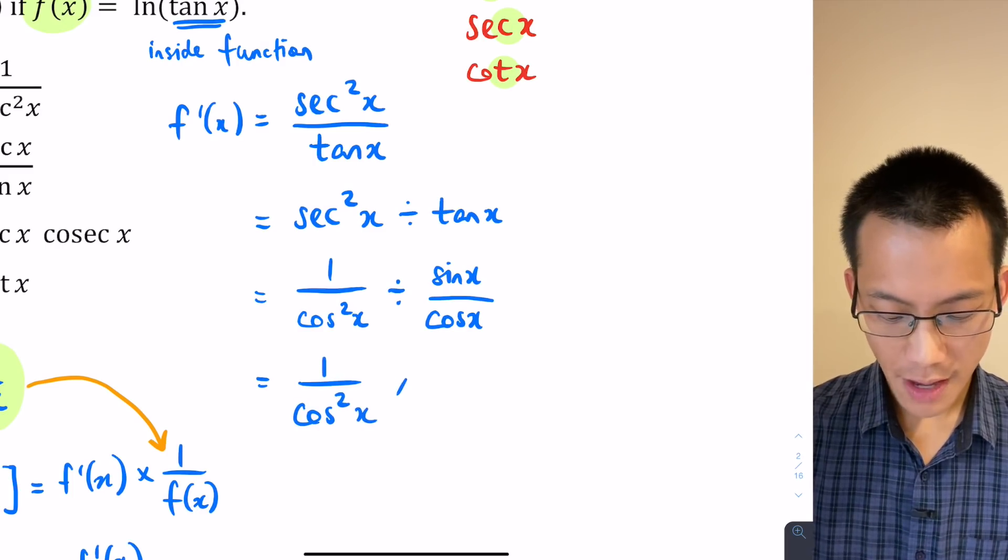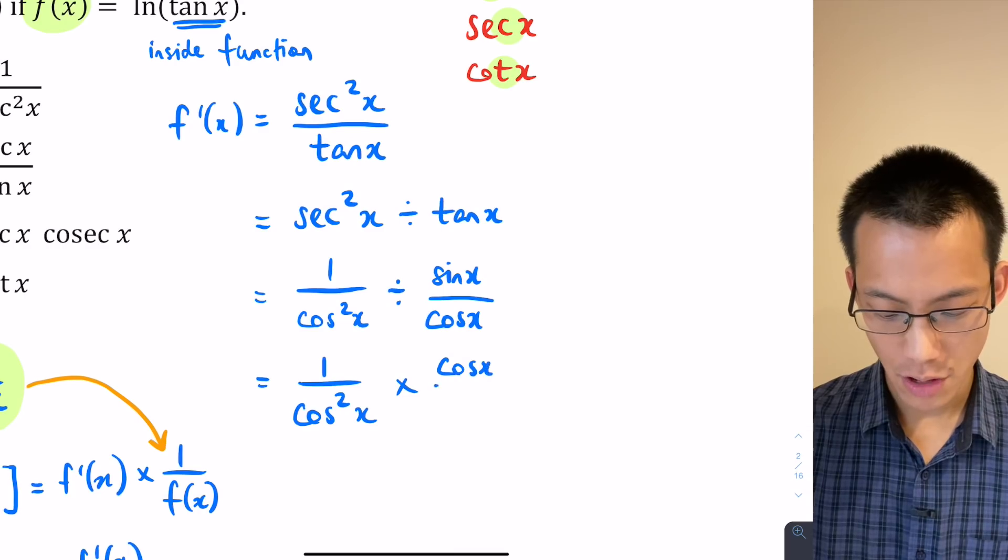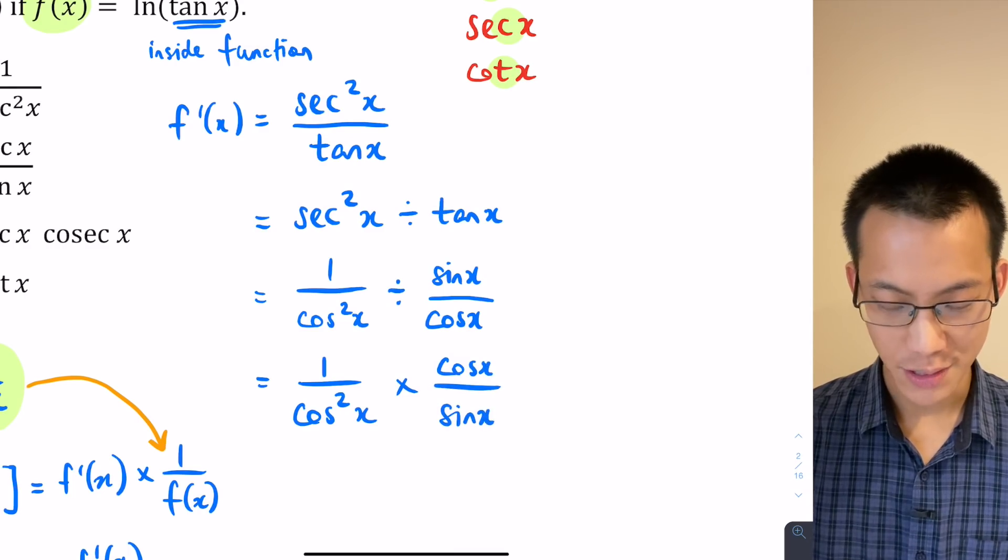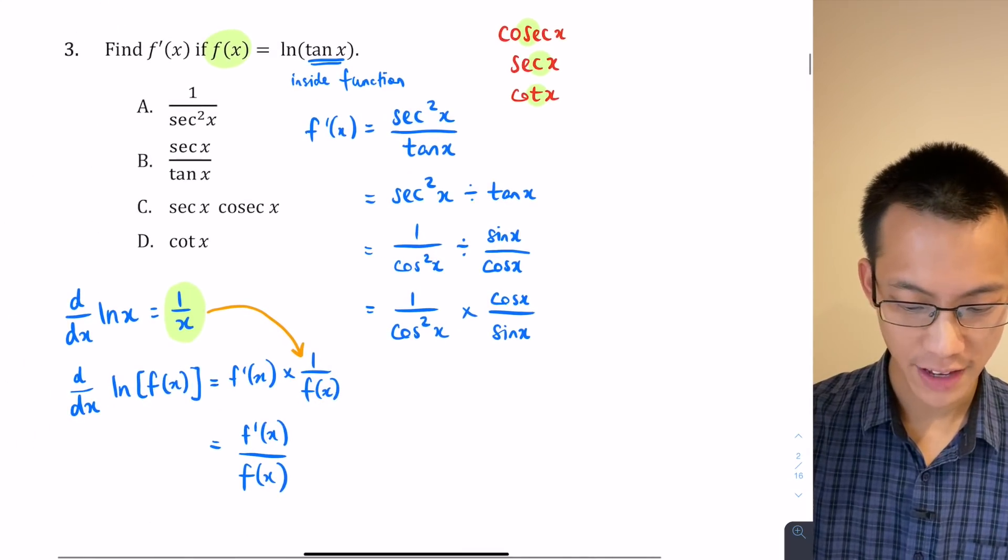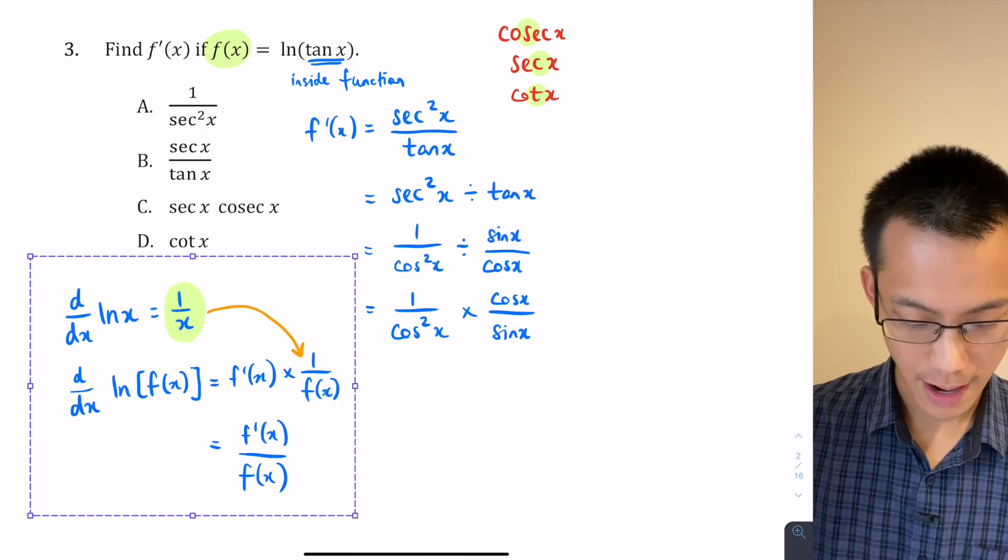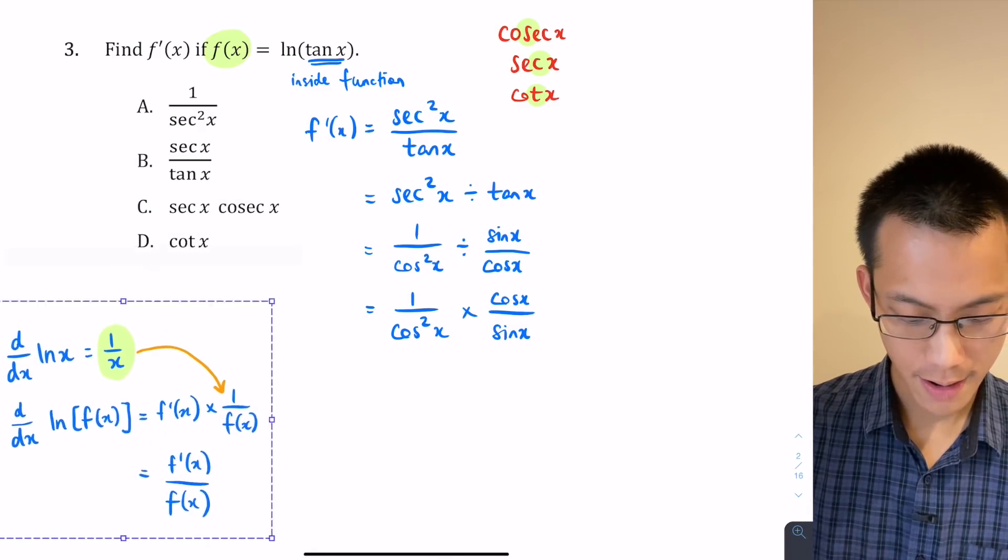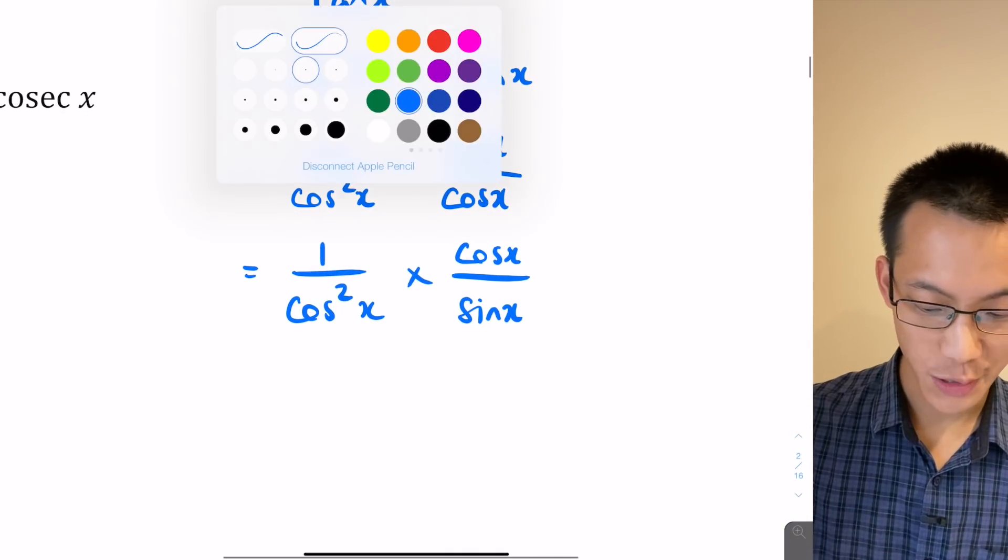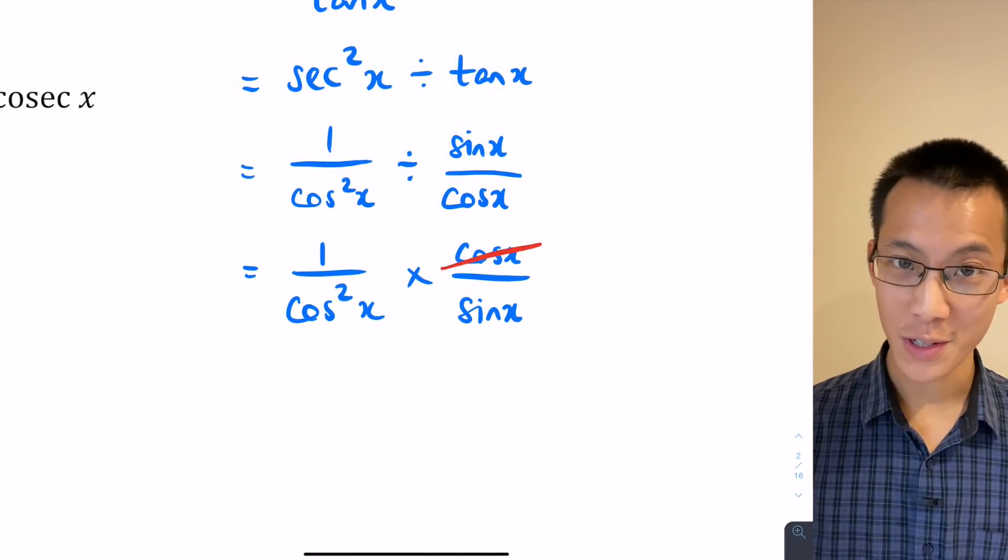Let's get rid of that division and take the reciprocal of the second fraction, so I'm getting 1 over cos²x multiplied by cos x on sin x. So this now, you can start to see where the simplification is going to happen.